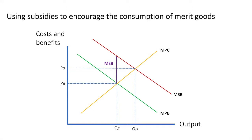Our socially optimal level of consumption is quantity Q0 at price P0. We need to achieve two things: getting producers to produce quantity Q0, and also getting consumers to buy it at that price. This situation indicates that there is a potential welfare gain of triangle ABC if the government can resolve this market failure.